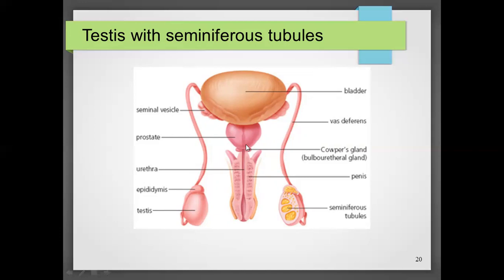In puberty, the foreskin — a fold of skin — provides protection. However, bacteria may accumulate in this space and cause infection, and the testicles may get infected.